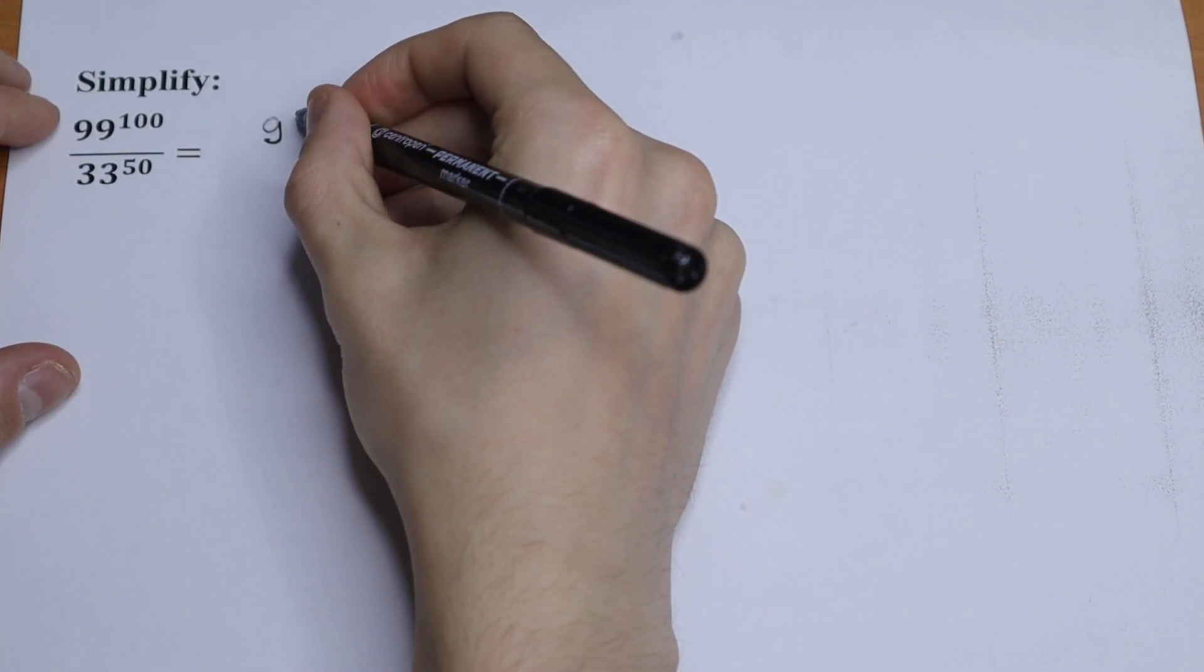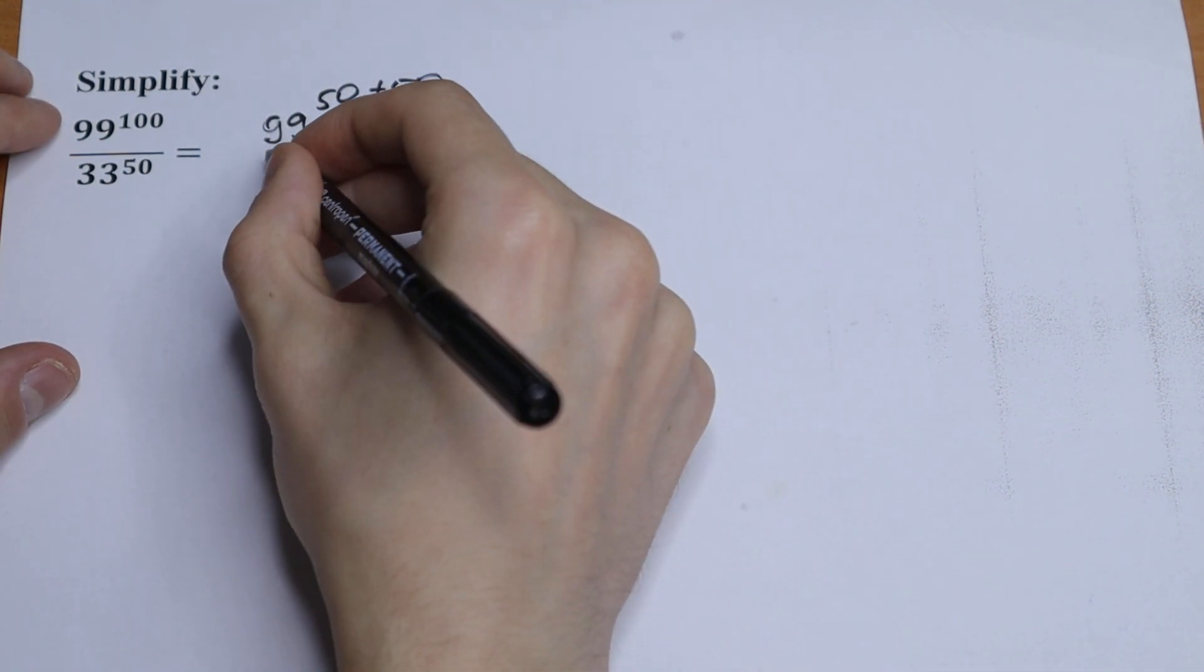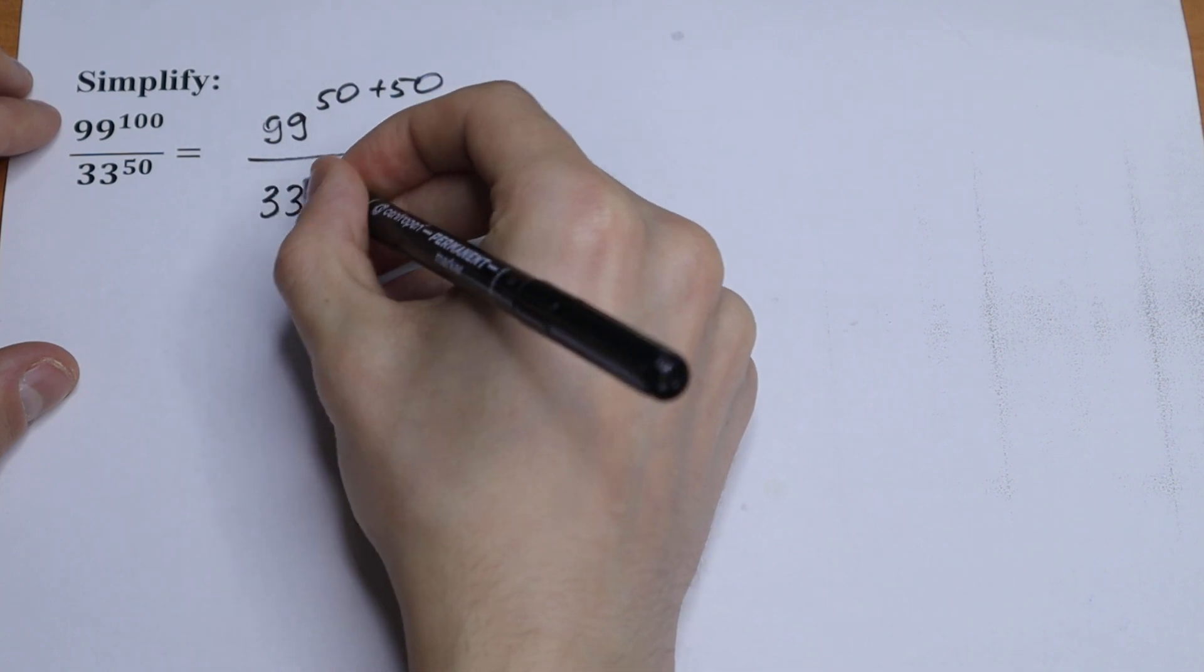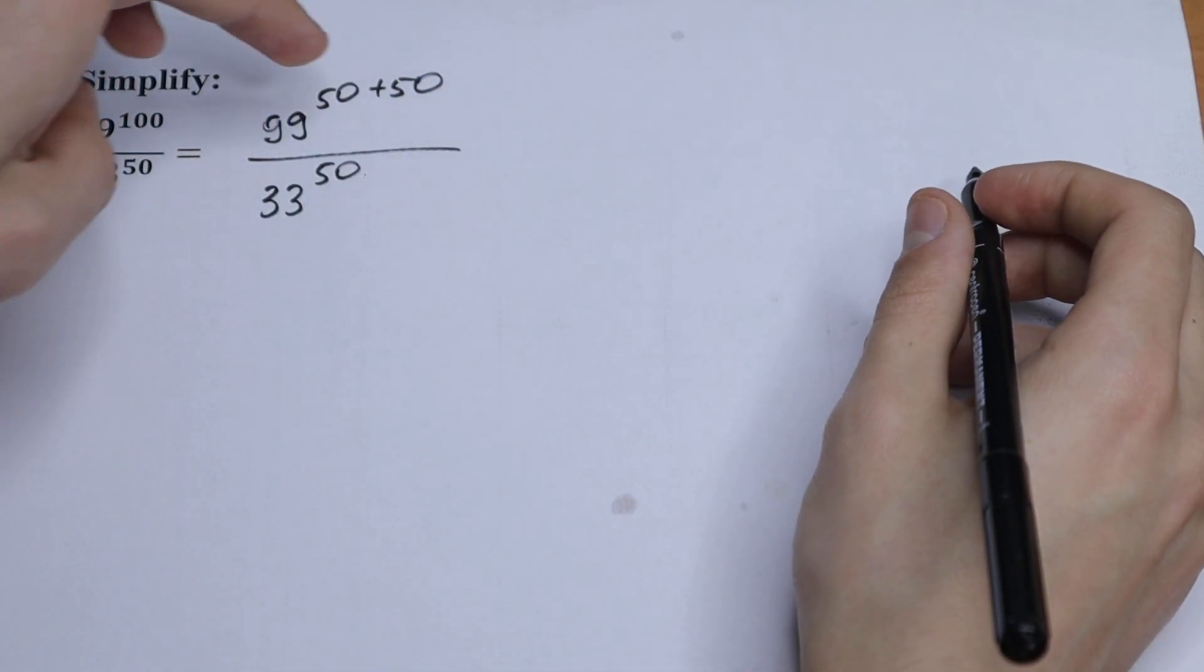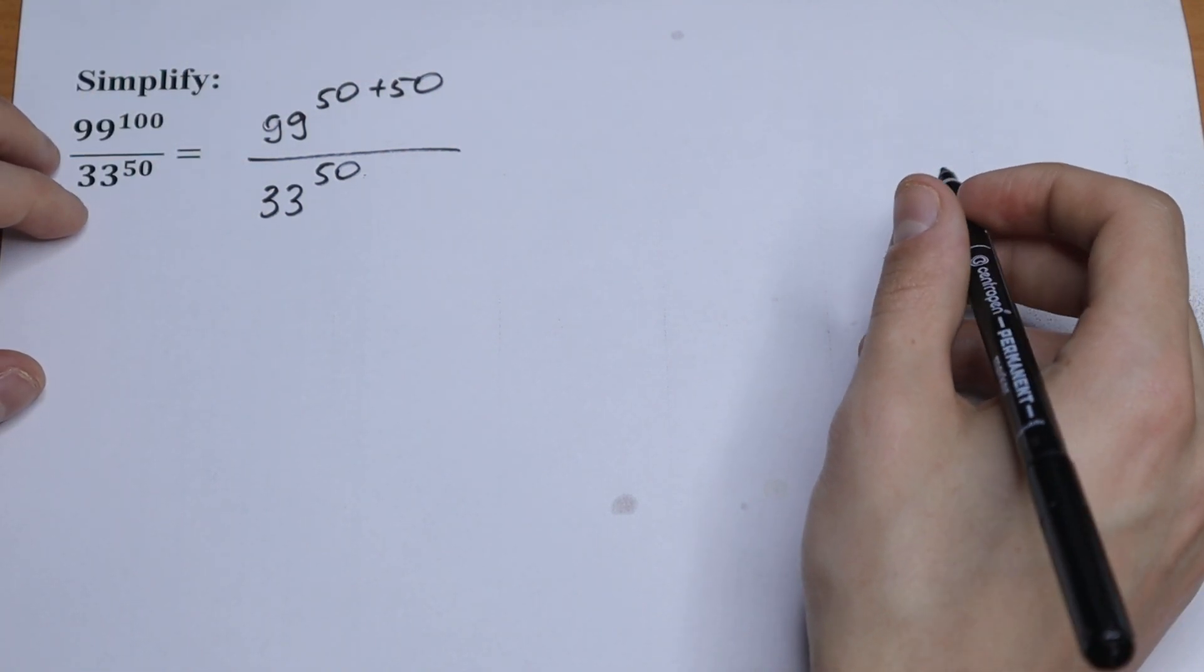We will have 99 to the power 50 plus 50 and all over 33 to the 50th power. So we write this 100 as a sum: 50 plus 50. What we are going to do next?